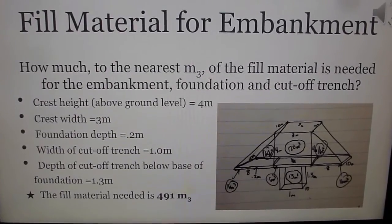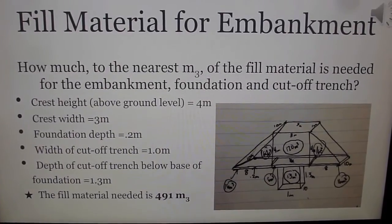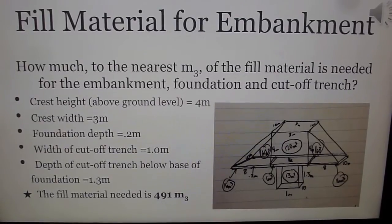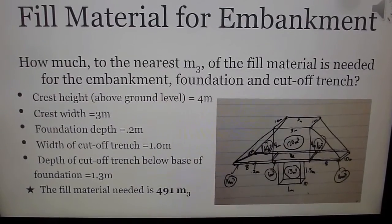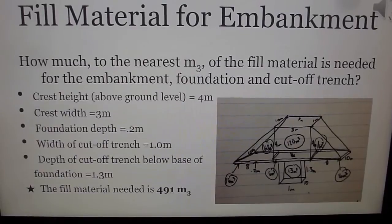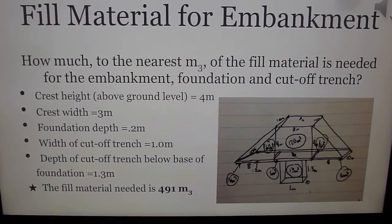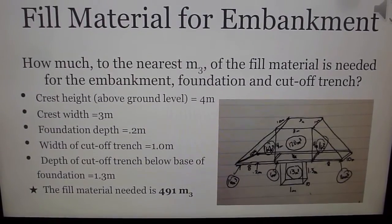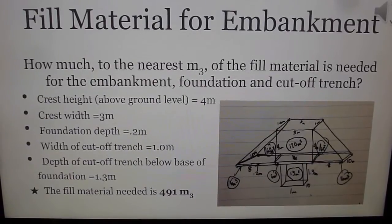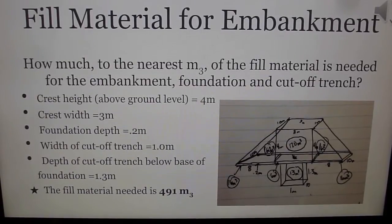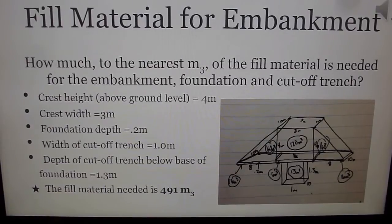The first step in this problem is to draw ourselves a picture and apply all of our given information to it. For this problem, we need to find volume. The formula for volume is length times width times height. We use our given information to find each section, and after we find each individual section, we add them together. In this case, the fill material needed is 491 cubic meters.